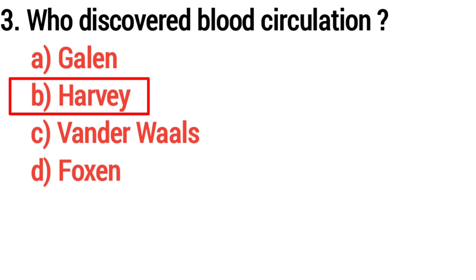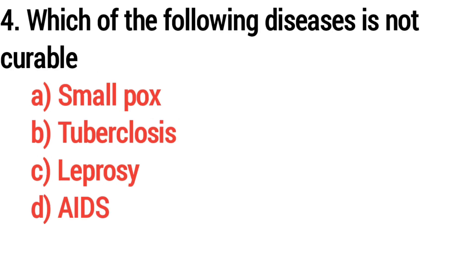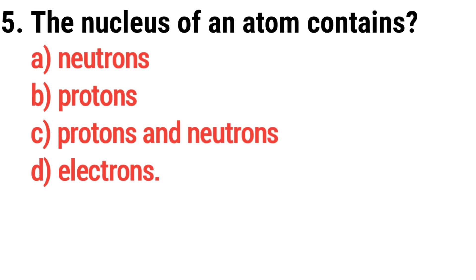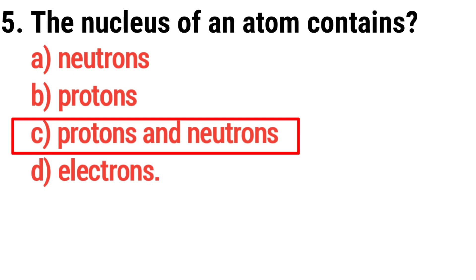Question number four: which of the following diseases is not curable? The answer is option D. Question number five: the nucleus of an atom contains — the answer is option C, protons and neutrons.